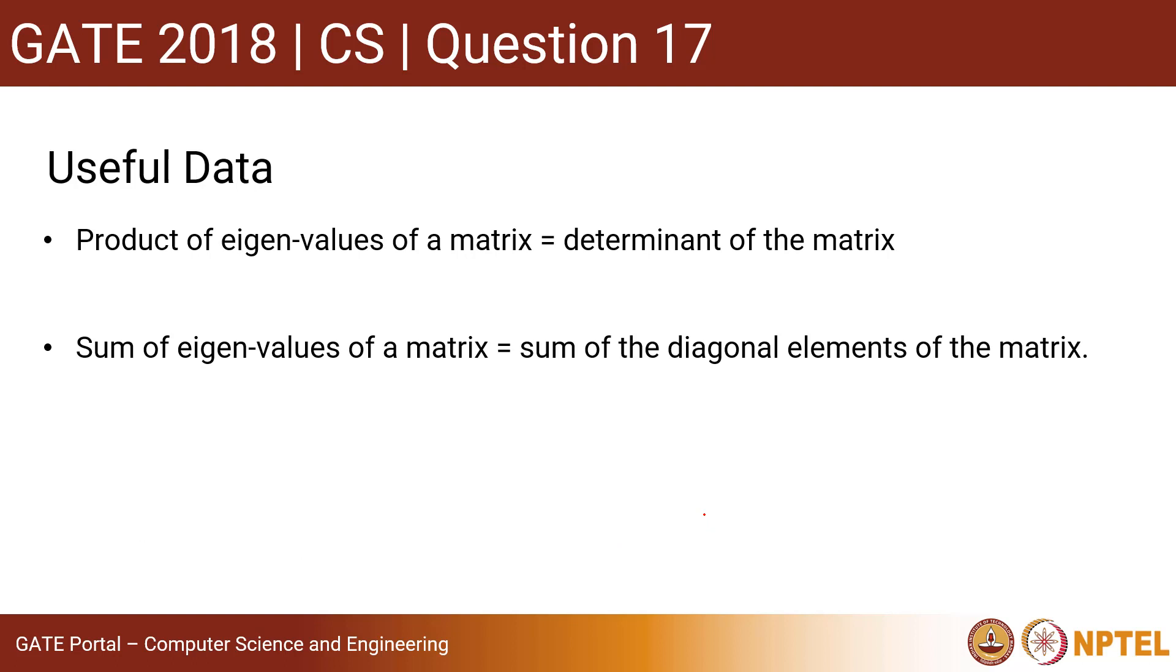Some useful data to solve this question: product of eigenvalues of a matrix equals to determinant of the matrix, sum of eigenvalues of a matrix equals to sum of the diagonal elements of the matrix.